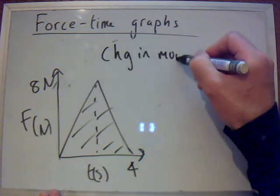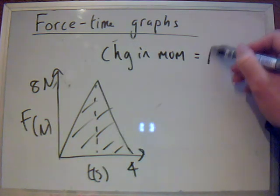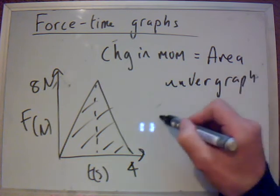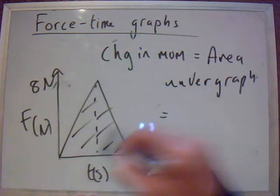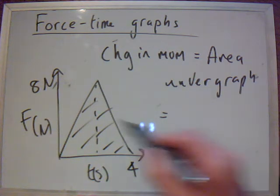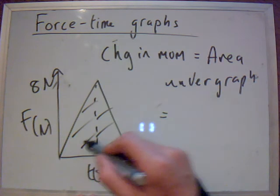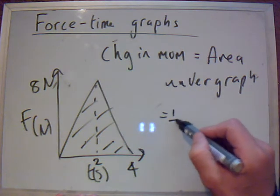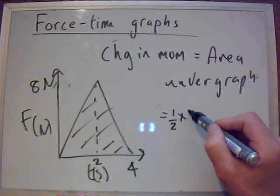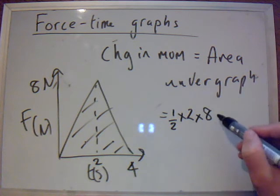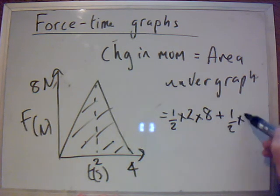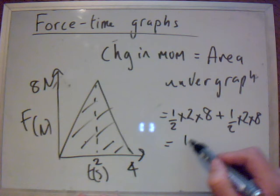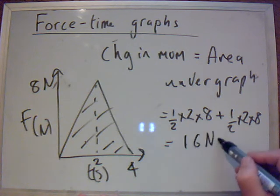Change in momentum is equal to the area under the graph, which equals, well, this triangle there, that's half the base times the height. So, half the base times the height for this triangle plus half the base times the height for this triangle. So, that would be a half times 2 times 8 plus a half times 2 times 8. And that gives us 16 Newton seconds.